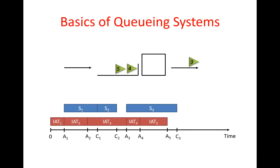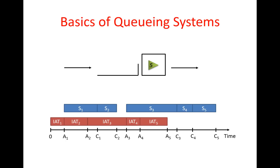The third entity leaves the system. Because we're using the FIFO rule, the fourth entity goes to the server and the fifth entity moves forward in the line. Completion four occurs and the fourth entity leaves the system. Finally, the fifth entity goes into the server, begins its process, and at some point the server finishes processing it and that entity leaves the system. This mimics the behavior and dynamics of a single-server queuing system.